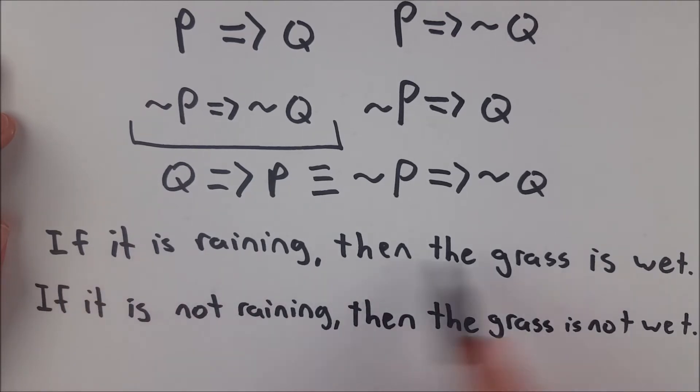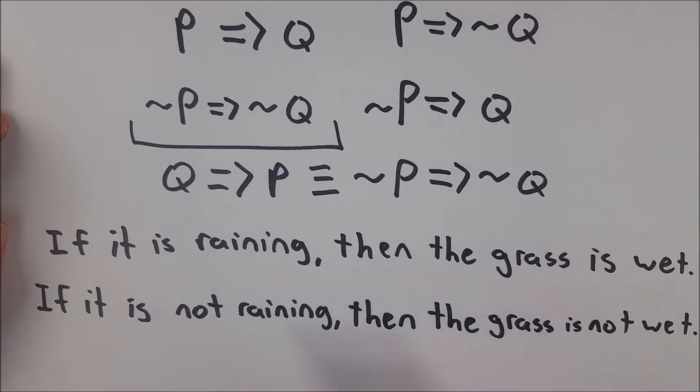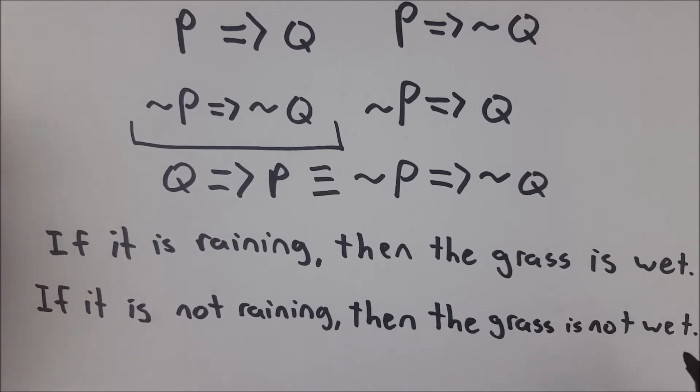And now if you took the converse of the original statement, you would have if the grass is wet, then it is raining. That, of course, is also not true for the same reasons that this is not true, which makes sense because like I said, this inverse is logically equivalent to the converse of the original statement.